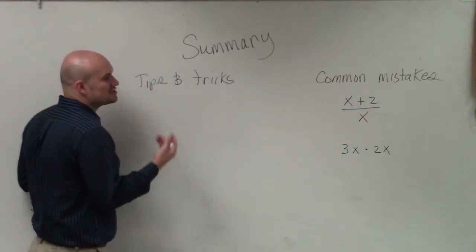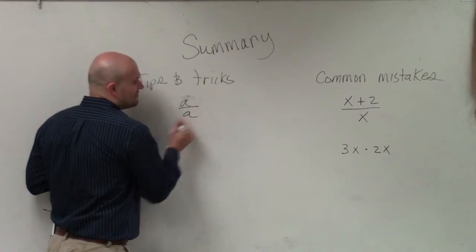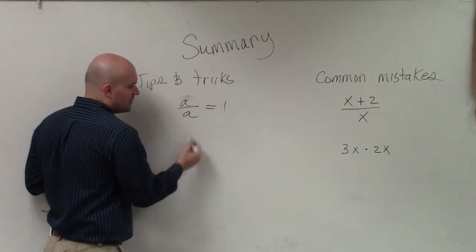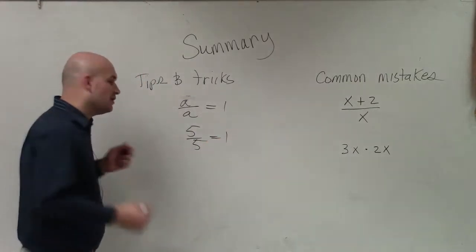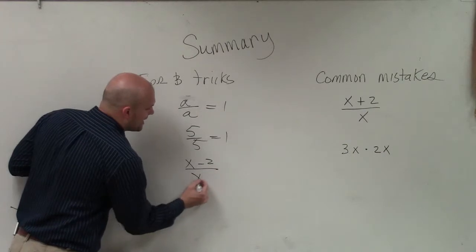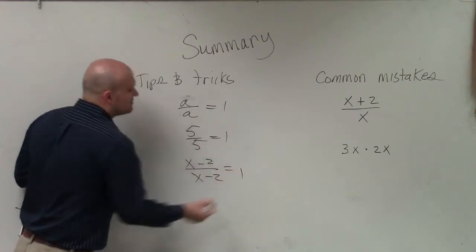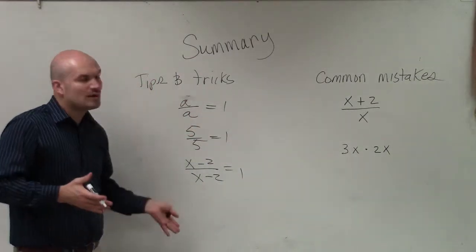And then the tips and tricks is using our division property of equality. And what that means is if I had a variable divided by a variable, we know that's 1. If I have a number divided by itself, we know that's 1. And that falls true if I have an expression: x minus 2 divided by x minus 2, that also divides to 1. So once we have applied our operation, we're going to want to use our division property to simplify them.